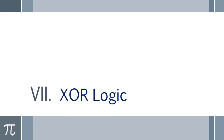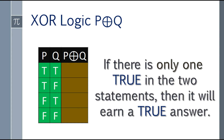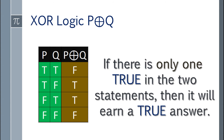Seventh topic: XOR logic. The logical operator is the circled plus sign. The technique: if there is only one true among the two statements, it earns a true answer. So the first and fourth rows are false, and the second and third rows — because only one of the two statements is true — they earn a true answer.